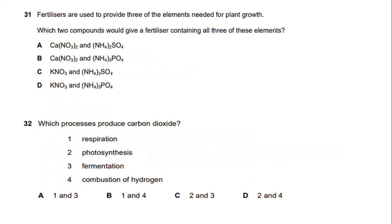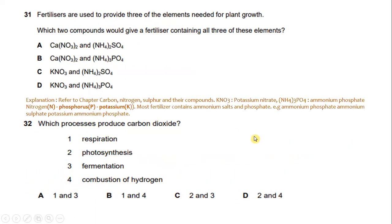Fertilizers are used to provide three of the elements needed for plant growth. Which two compounds would give a fertilizer containing all three elements? This question also came up in the first set for 2022. The answer refers to chapter carbon, nitrogen, sulfur and their compounds. KNO3 is potassium nitrate and (NH4)3PO4 is ammonium phosphate, providing nitrogen (N), phosphorus (P), and potassium (K). Most fertilizers contain ammonium salts and phosphate, so the answer is D.